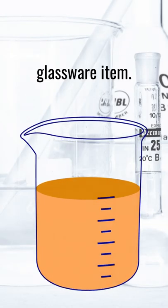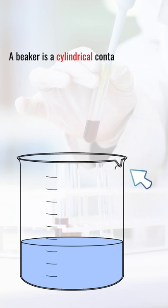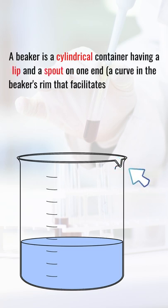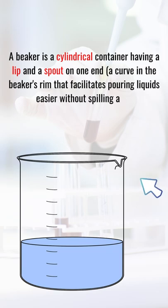A beaker is a laboratory glassware item. A beaker is a cylindrical container having a lip and a spout on one end, a curve in the beaker's rim that facilitates pouring liquids easier without spilling any.